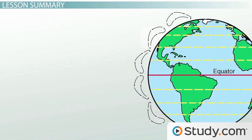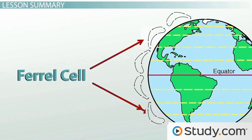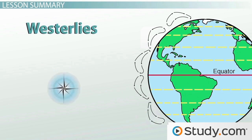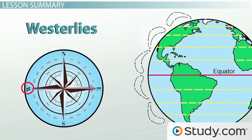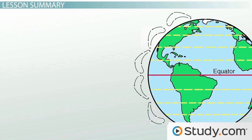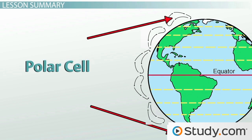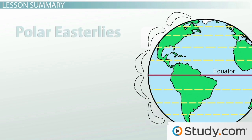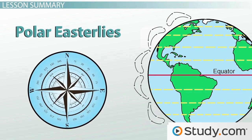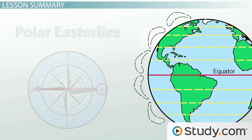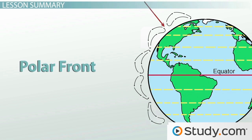Some of the air falling from the Hadley cell continues to travel to the poles, creating the second windy belt, the Ferrel cell, which is home to the westerlies that blow from west to east. The Ferrel cell meets up with the third and final windy belt, the polar cell, around 60 degrees north and south latitudes. The polar cell is home to the cold, dry polar easterlies, which blow from east to west, and when these meet up with the warm, moist air of the Ferrel cell, they create the polar front.